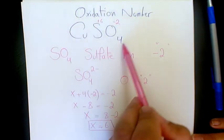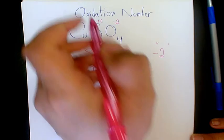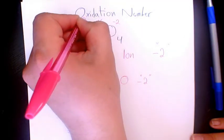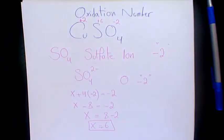SO4 is negative 2, so copper is going to be positive 2. So the charge of copper is positive 2, sulfur is positive 6, and oxygen is negative 2.